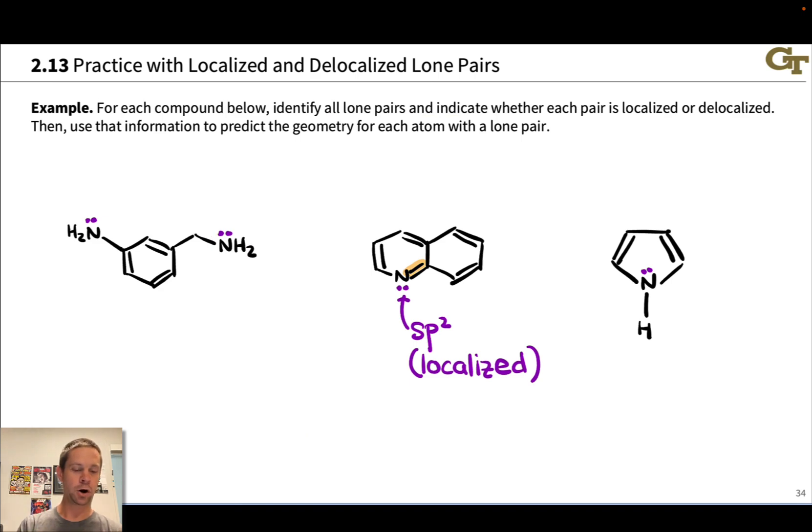That pair of electrons on the nitrogen is localized, isolated to this nitrogen atom, and it's sitting in an sp3 hybrid orbital. And so here, again, we've got a localized lone pair of electrons. Implications on reactivity, that's a pretty basic lone pair as nitrogen lone pairs go.